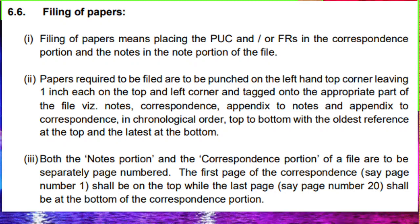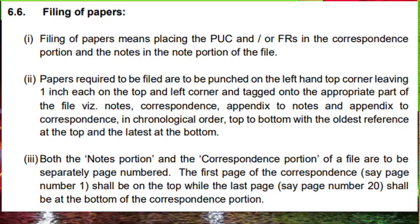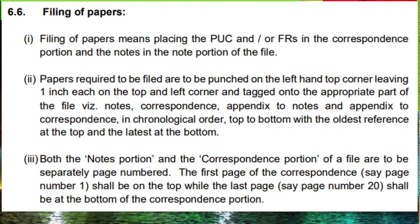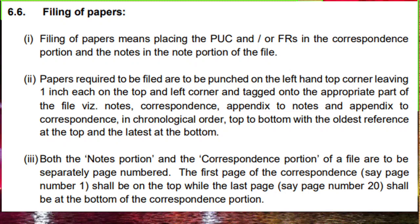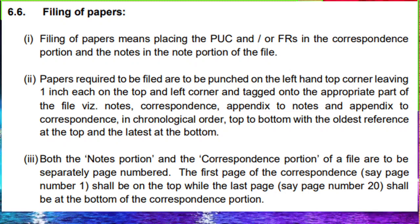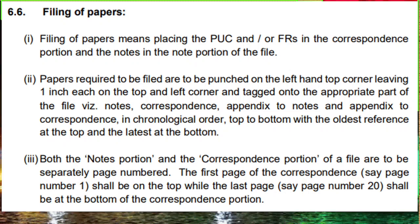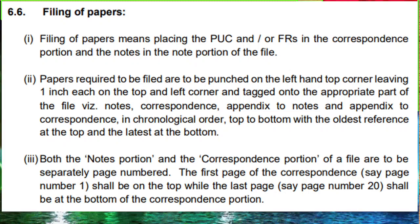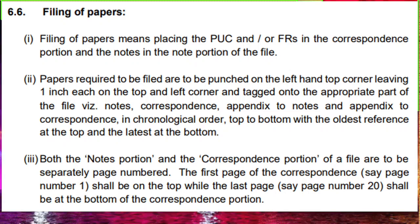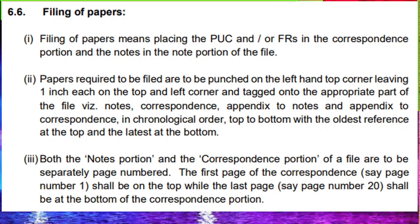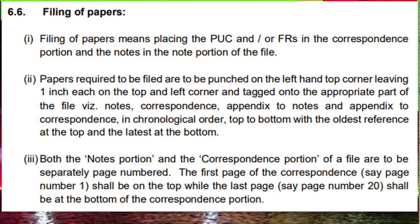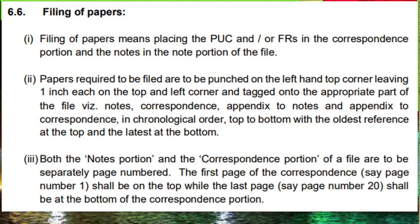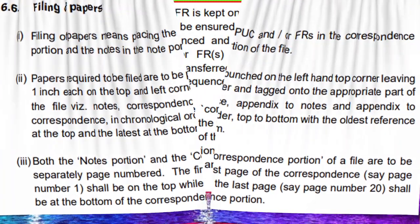The first page of correspondence shall be on the top while the last page shall be at the bottom of the correspondence portion. Generally, the top right corner of each correspondence will have its serial number. The last paper will have its numbering at the bottom, so that it is clear that it is the last paper — this is a useful indication.